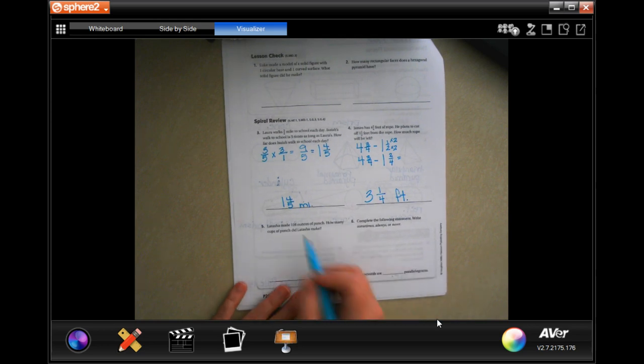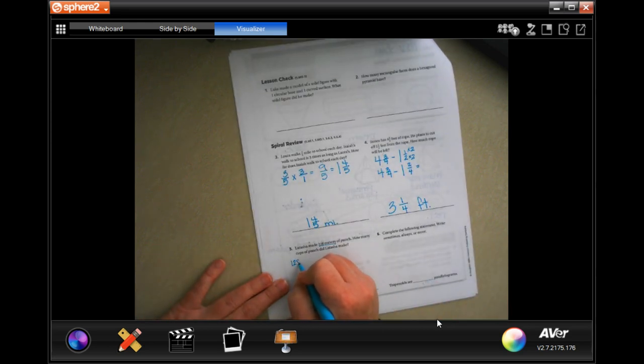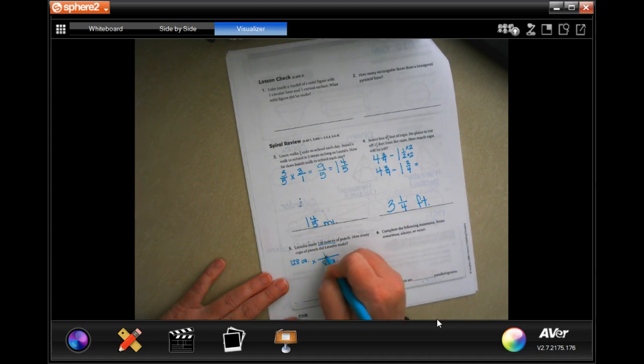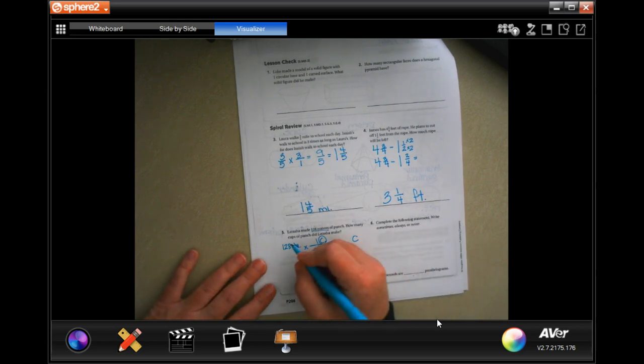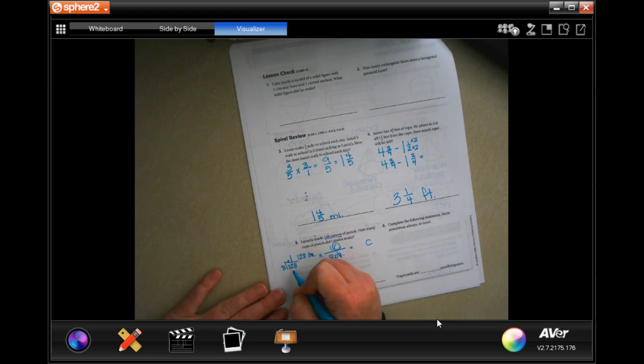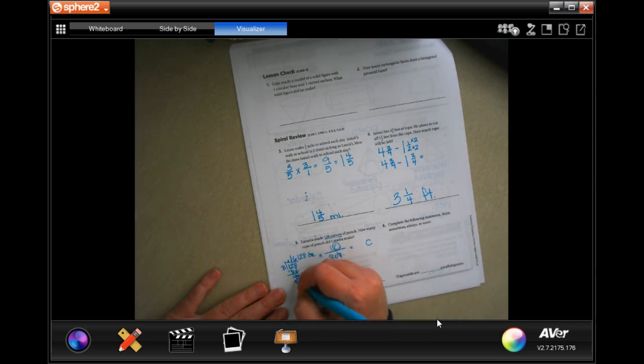Okay, Latasha made 128 ounces of punch. How many cups of punch did Latasha make? Okay, so 128 ounces. There are eight ounces in one cup, so now I can cross-cancel ounces, which gives me cups, which is good. And I'm going to have to divide 128 by eight. Well, it's not going to go into one, but it'll go into 12 once. One times eight is eight. Subtract, get four. Four is smaller than eight, so I'm going to bring down this other eight. Eight goes into 48 six times. Six times eight is 48. Subtract is zero. So 16 cups.